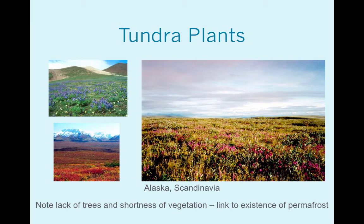Tundra plants: if you look, you can see no trees. Why? Because of the permafrost — about six inches down is a layer of frozen soil, so if your root system is greater than six inches, you can't grow there. Also know this isn't technically a grassland because there are a lot of mosses and herbs that grow amongst the grass.